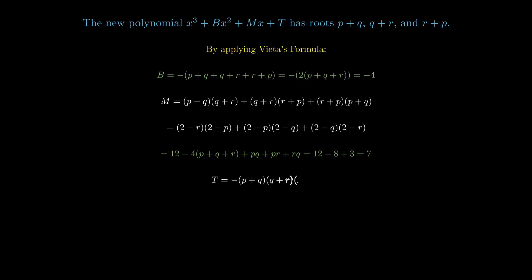Finally, we calculate t, the negative of the product of the roots of the new polynomial. The product is given by negative p plus q times q plus r times r plus p. Expanding and substituting the known values, we calculate that t equals 2017.